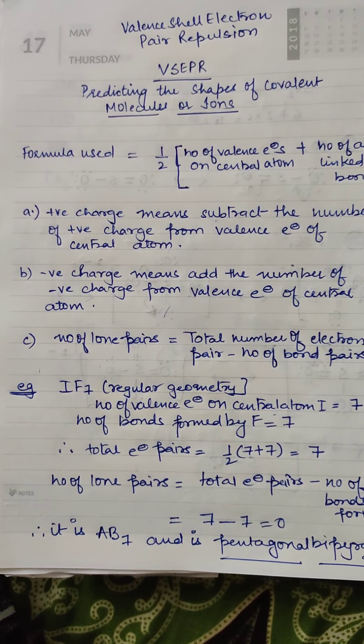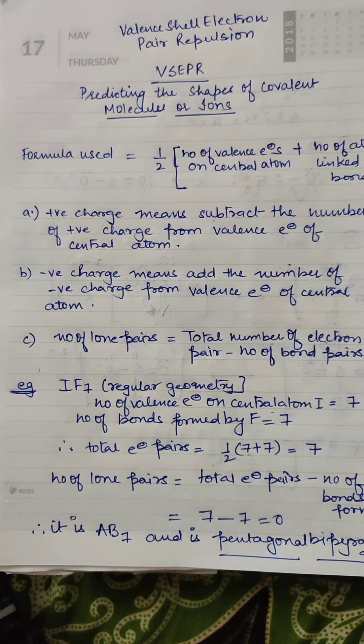VSEPR is a method by which you can easily predict the shape of a covalent molecule or ion. The formula we are going to use to predict the shape is used to calculate the total electron pairs. The formula is: half the number of valence electrons present on the central atom, plus the number of atoms linked via bonds.